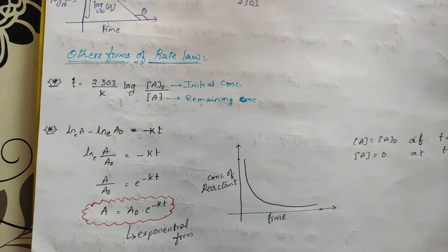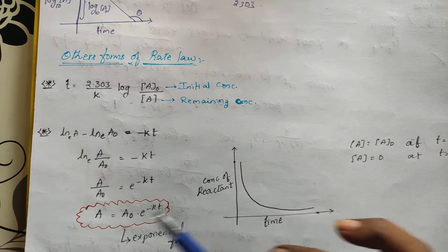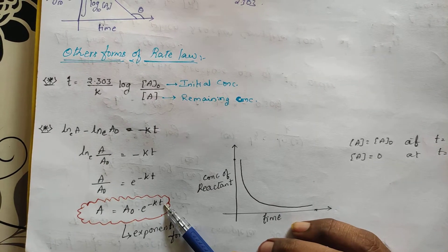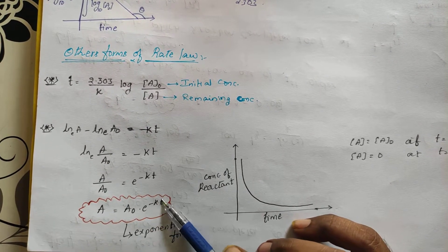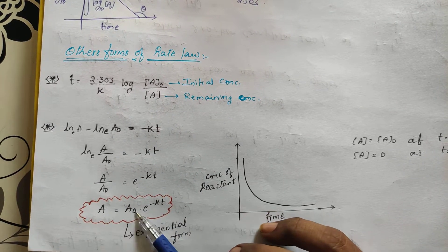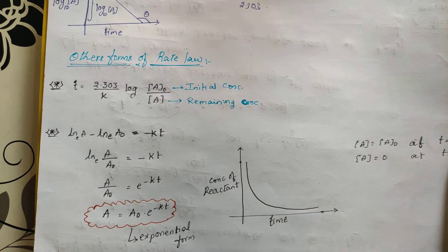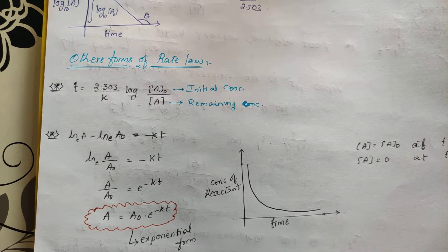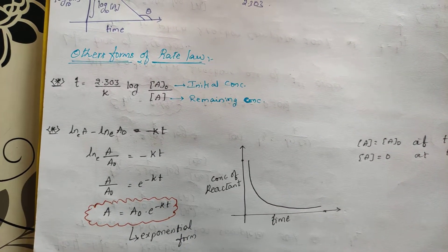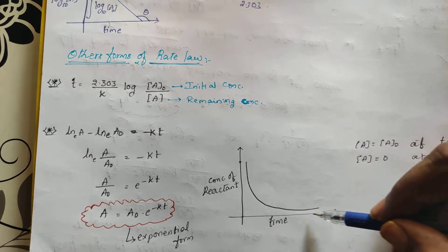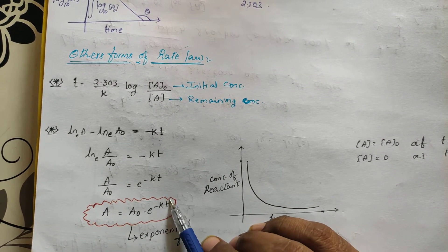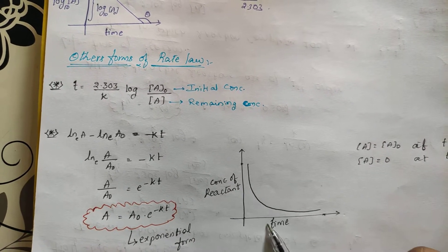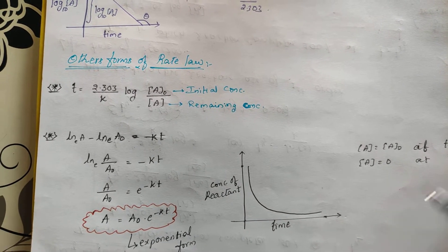Now plotting the graph of concentration of reactant with respect to time using A = A₀·e^(−Kt): at time t = 0, A = A₀ (initial concentration). At time infinity, the concentration keeps decreasing but never reaches zero — the graph follows an exponential decay curve.